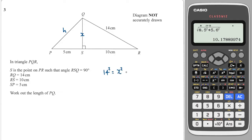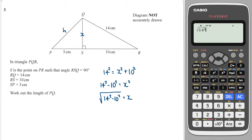So using Pythagoras's theorem on the right-hand side, the hypotenuse which is 14 squared is equal to the two shorter sides squared added together. So I can write: 14 squared minus 10 squared is equal to X squared, and then square-rooting both sides, the square root of 14 squared minus 10 squared is equal to X. On my calculator I would press the square root button and then 14 squared minus 10 squared, and that gives me 9.798.